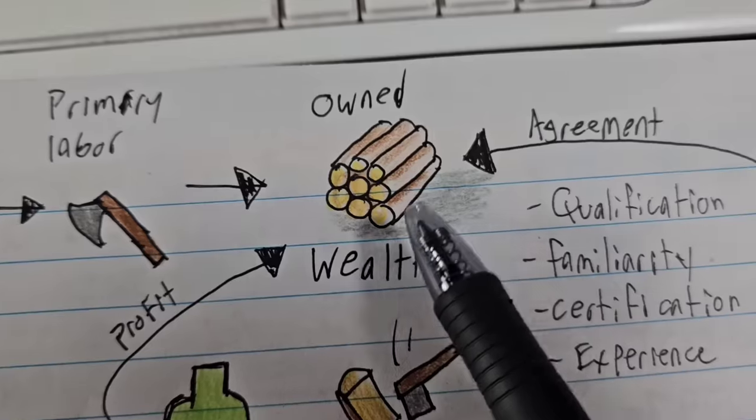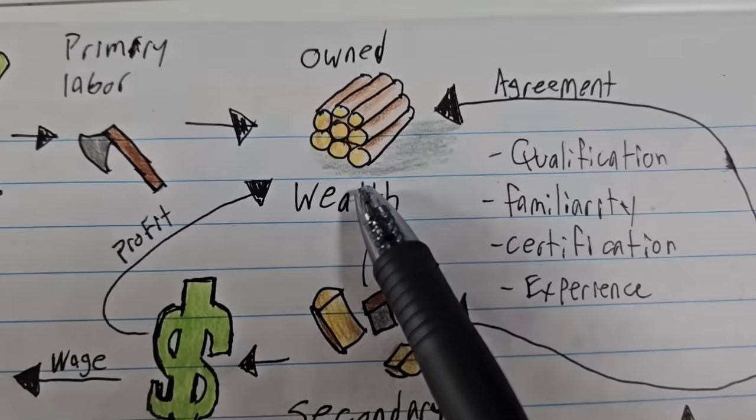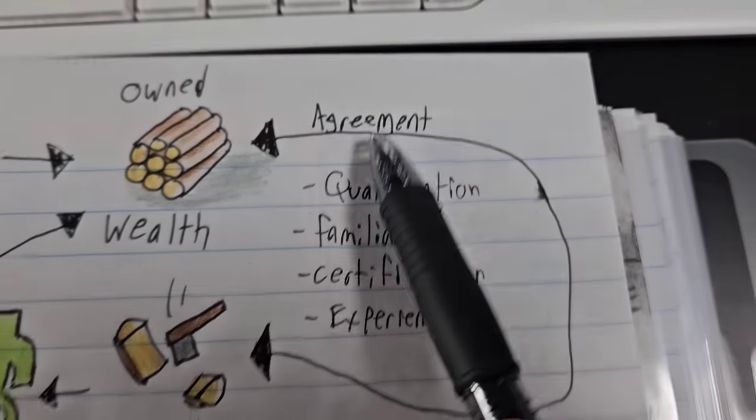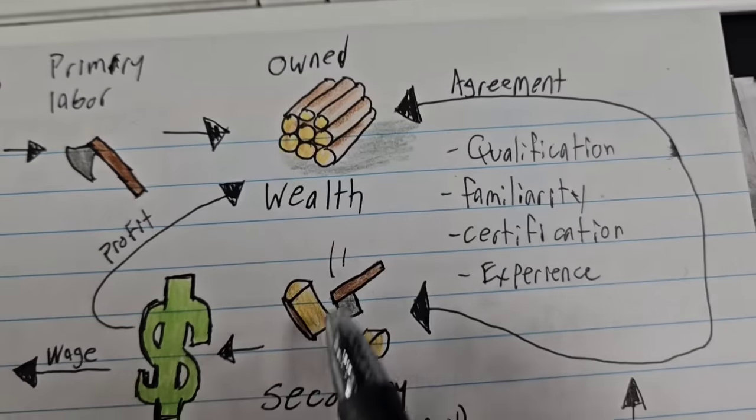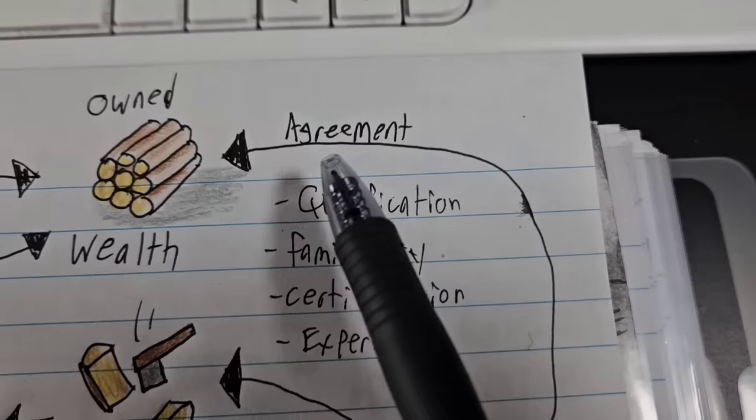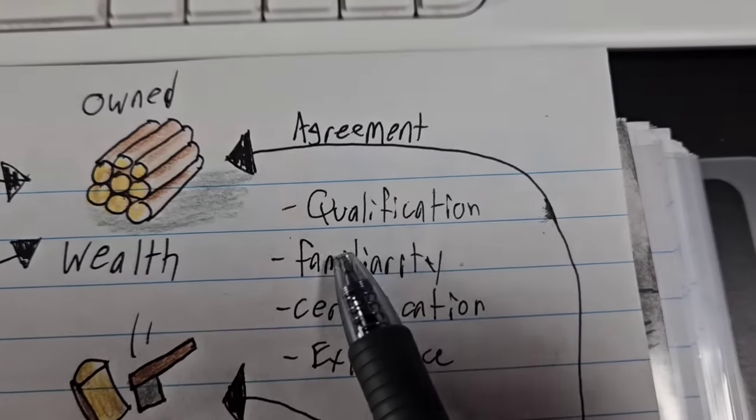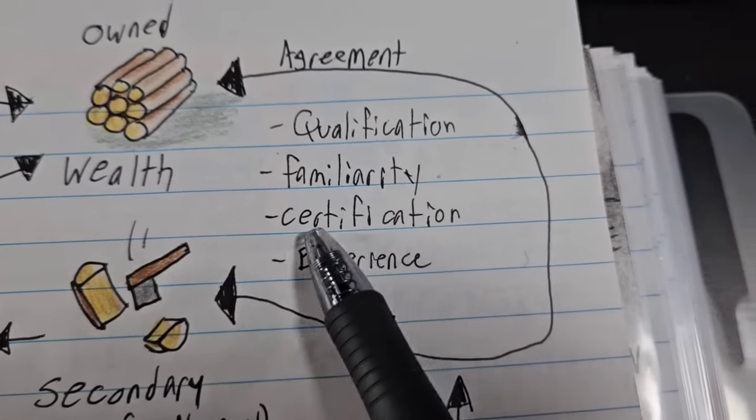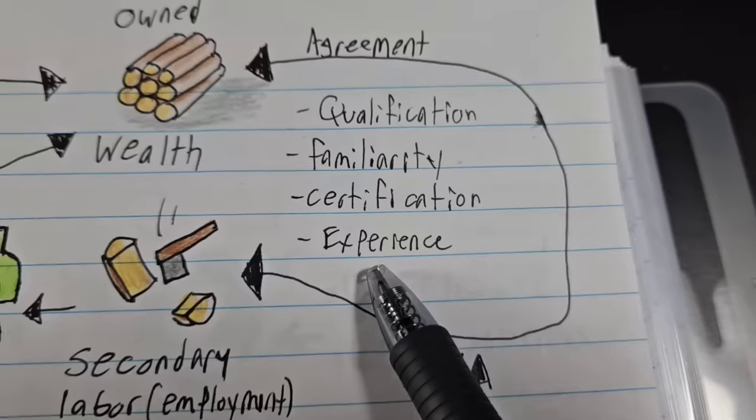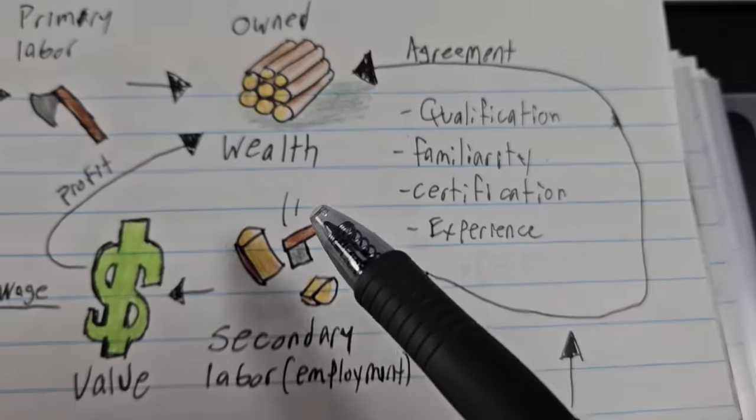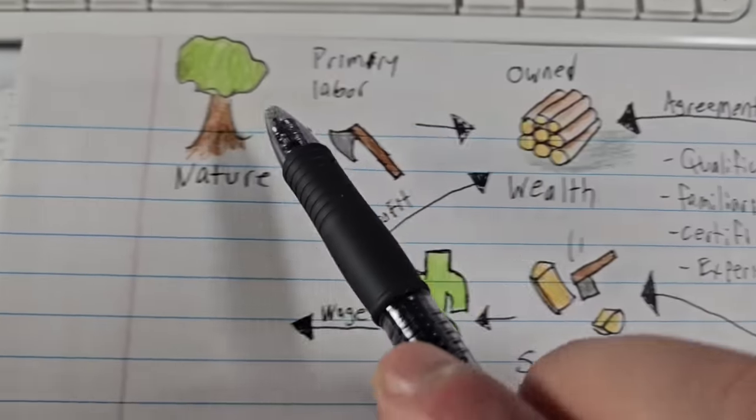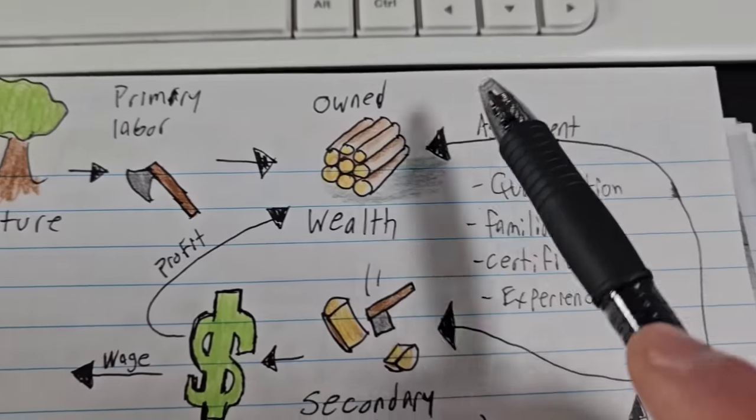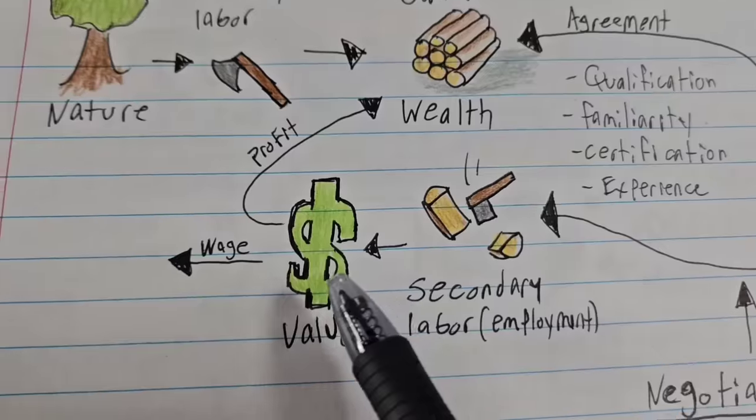And when they make that stuff, they own that stuff. And then they can enter into an agreement with other people to process that stuff into things that we need, like chopping the wood into firewood. And you do that through agreements. You can say, I'm the best wood chopper around. I've been doing it for a while. I'm certified to chop wood. I've been doing it for 20 years. You make an agreement between the employee and the employer who owns what he made from nature in order to produce value.